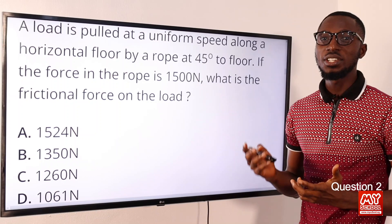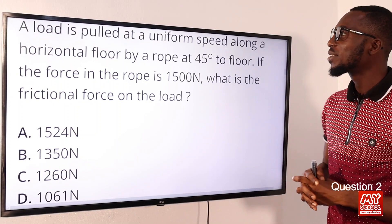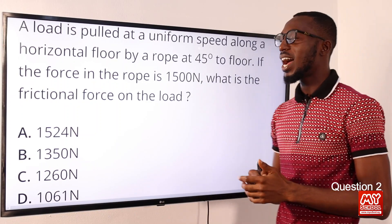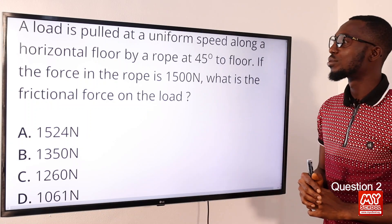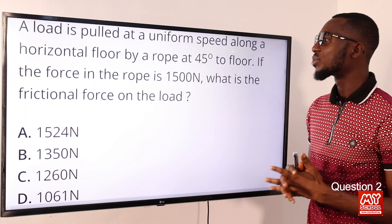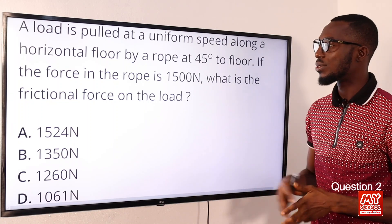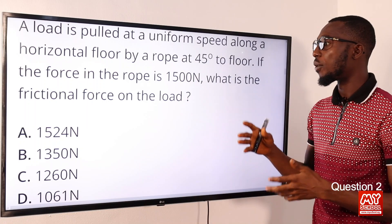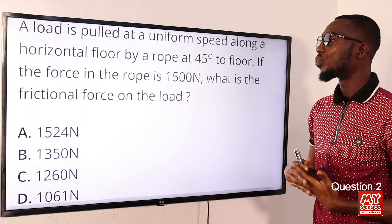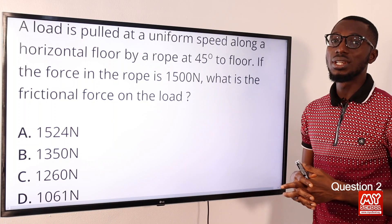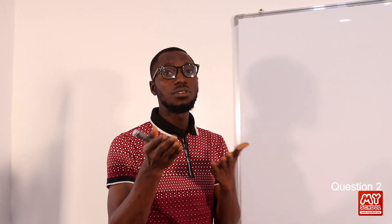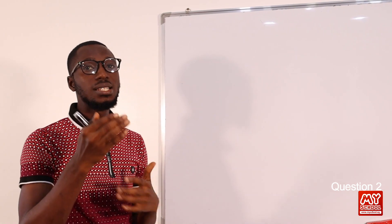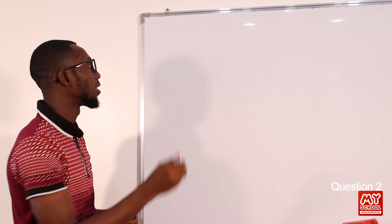Question two: a load is pulled at a uniform speed along a horizontal floor by a rope at 45 degrees to the floor. If the force in the rope is 1500 newtons, what is the frictional force on the load? We should know that frictional force can be equal to the coefficient of friction times the normal reaction.